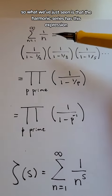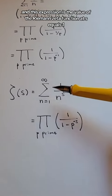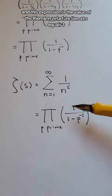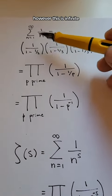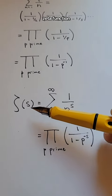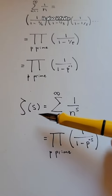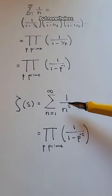So what we've just seen is that the harmonic series has this expression, and this expression is the value of the Riemann zeta function at s equals 1. However, this is infinite, it's an infinite sum, and the value of the Riemann zeta function at s equals 1 is also infinite, because this function has a pole at s equals 1, but nonetheless,